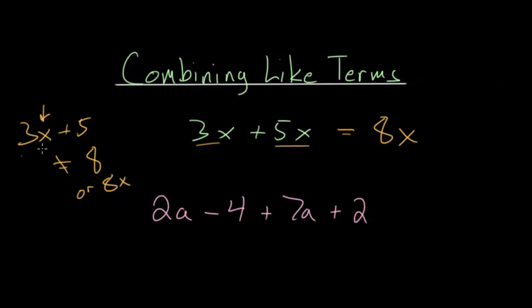Now if we knew a particular value for x, like x is equal to 1, then this would simplify to 8. But until we know which value of x this is, we have to leave these as two separate terms. There is no way to combine these together.